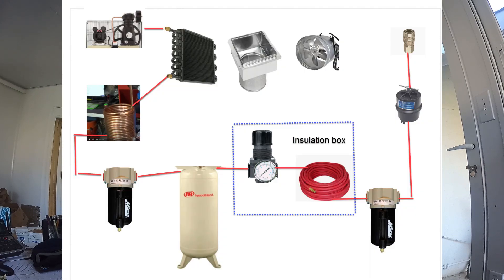Extend the length of the condensation coil — i.e. dwell — as required to get your desired results. Dwell is critical to performance. Place a water trap at the exit of this condensation coil. During the winter, you may have to remove the insulation from the coil to keep the water from freezing.